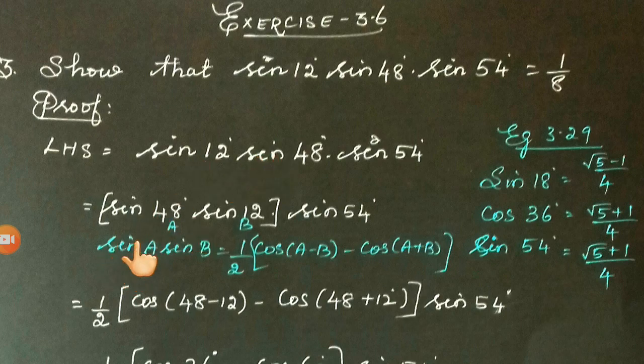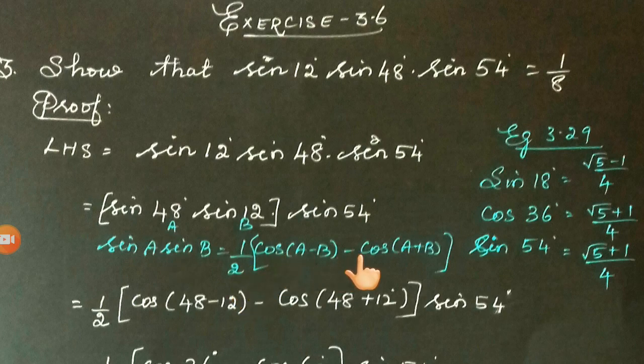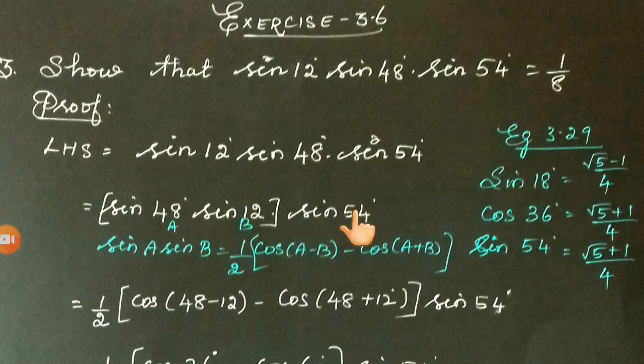Since we have sin and sin, we shall use the identity sin A × sin B = 1/2[cos(A - B) - cos(A + B)]. So 12 is smaller and 48 is greater, so let's rearrange: sin 48° × sin 12° × sin 54°. Now we are going to use the identity for this.